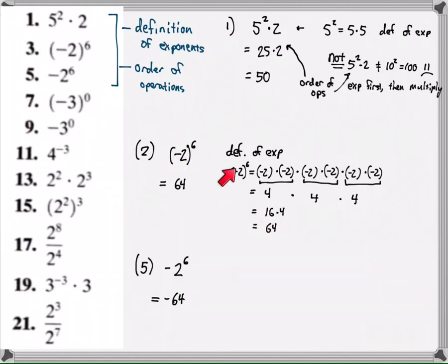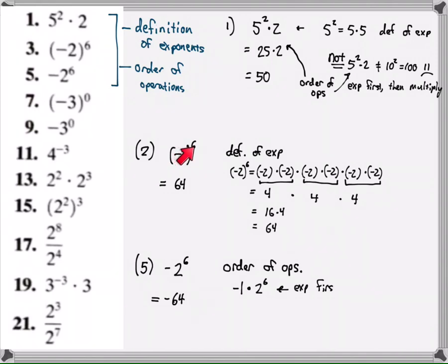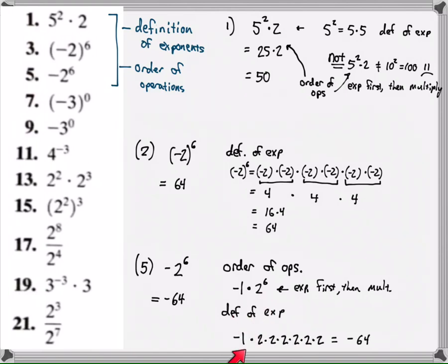Instead of writing all that out, I'm using my definition of exponents to jump straight to the result. What's the relationship between problems 3 and 5? It has to do with order of operations. Negative two to the sixth power is negative one times two to the sixth — the parentheses group the negative with the 2. Without the parentheses, that's taking 2 to the sixth power and then multiplying by negative one: exponents first, then multiply, giving us negative 64.